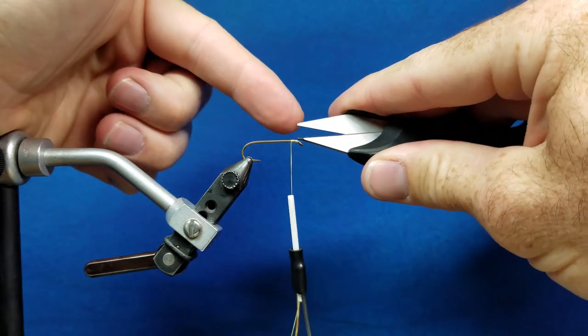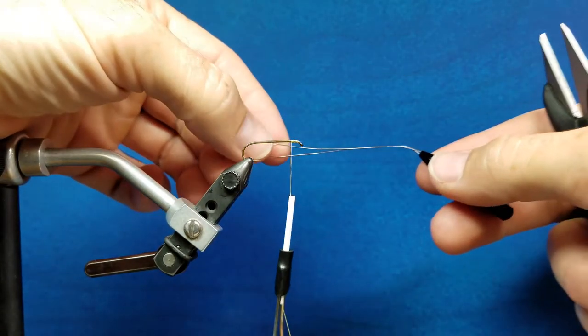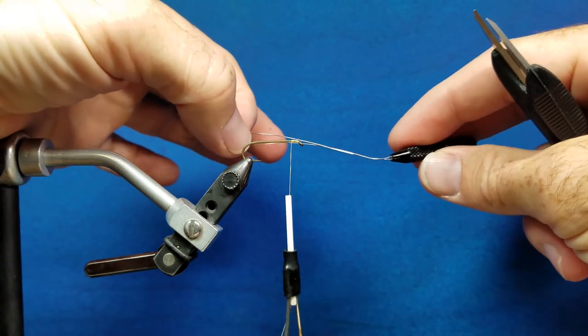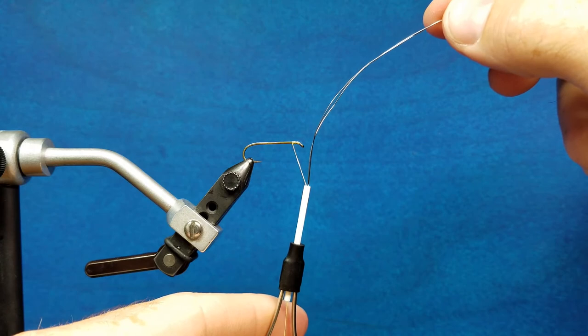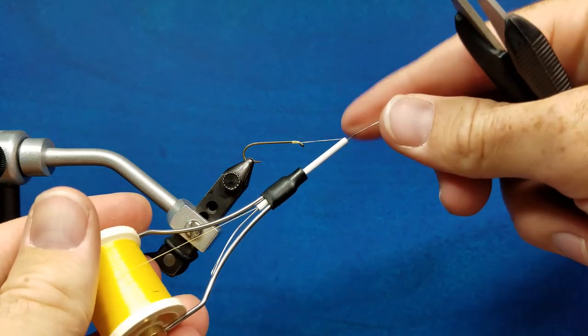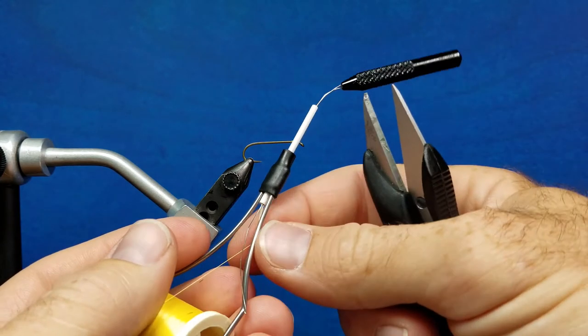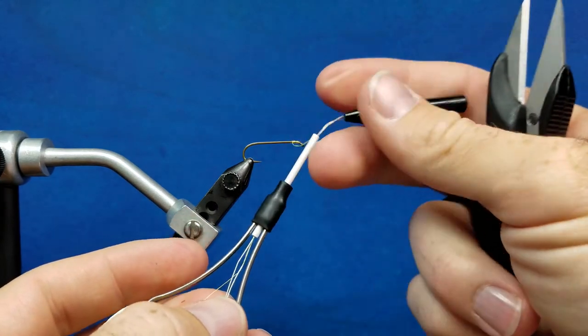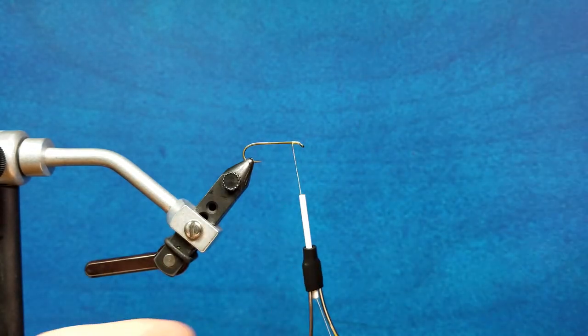Bobbin threader. This is very simply just a little piece of metal and this slides right down the stem of the bobbin when you switch thread types. You slide it through there, slide the slack thread through the opening, and when you pull it back out of the tip of the bobbin, the thread will come with it.